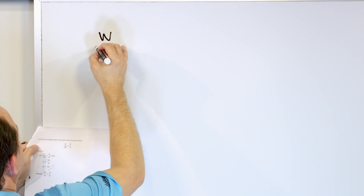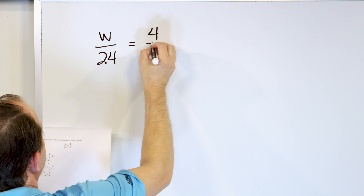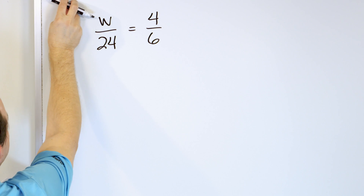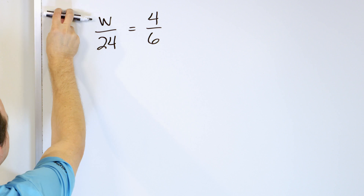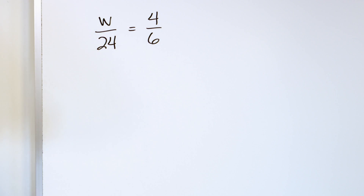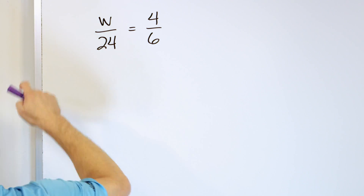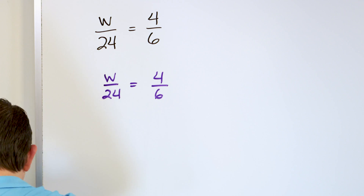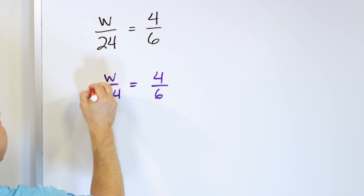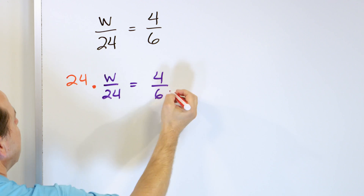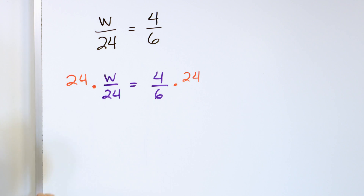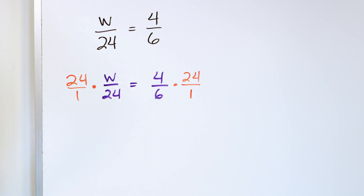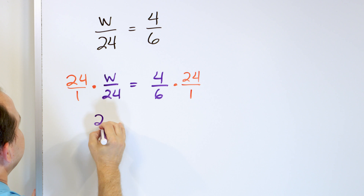Problem number two. We're going to change letters: W as it compares to 24 is equal to four over six. We're saying the relationship four as compared to six is the same as the relationship between W as it compares to 24. What does W have to be to maintain the same relationship — the same proportion? So on the left, we want to get W by itself. Let's rewrite everything: W over 24 equals four over six.